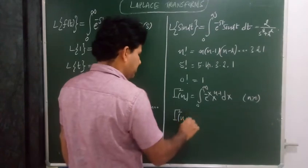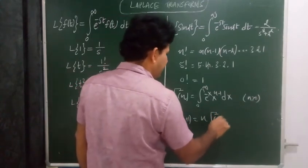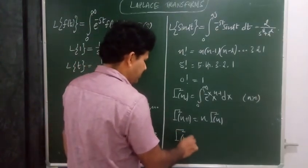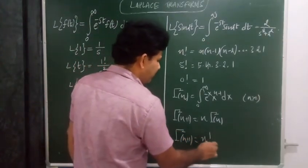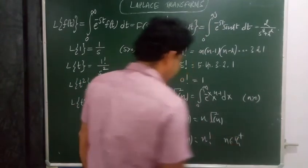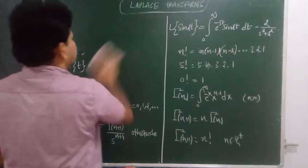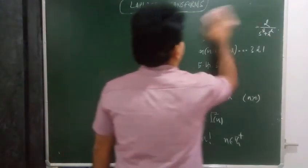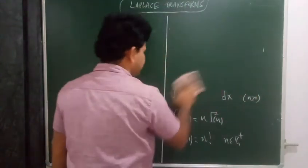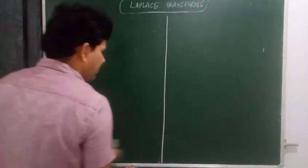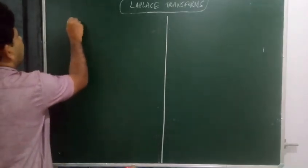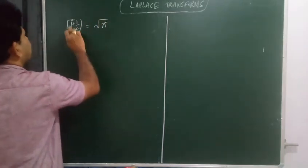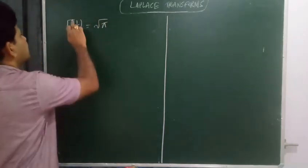Gamma of n plus 1 equals n times of gamma of n when n is a fraction. If gamma of n plus 1 equals n factorial when n belongs to the integers. Also, gamma of 1/2 equals square root of pi. And gamma of negative 1/2 equals minus 2 root pi.